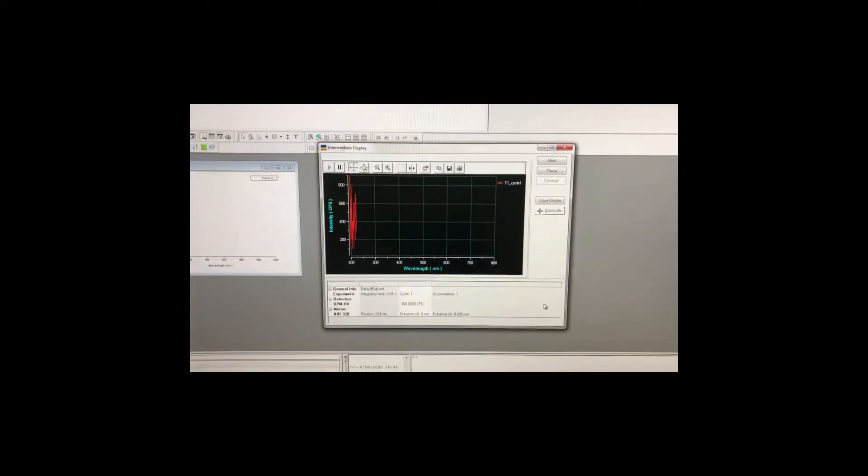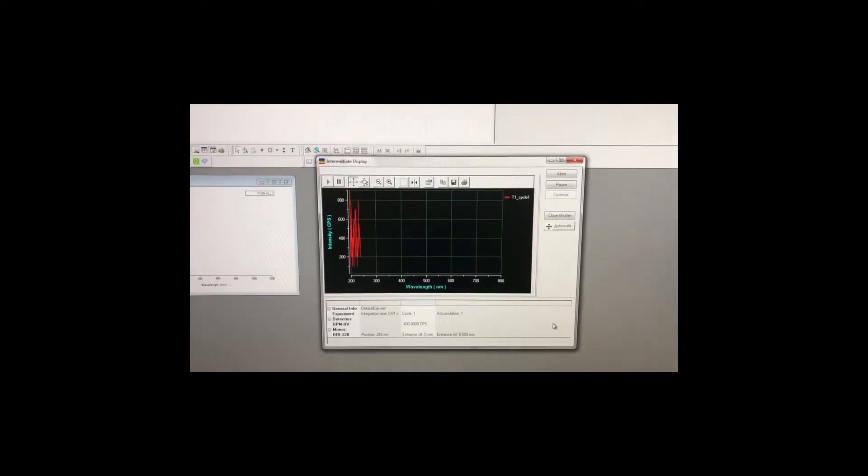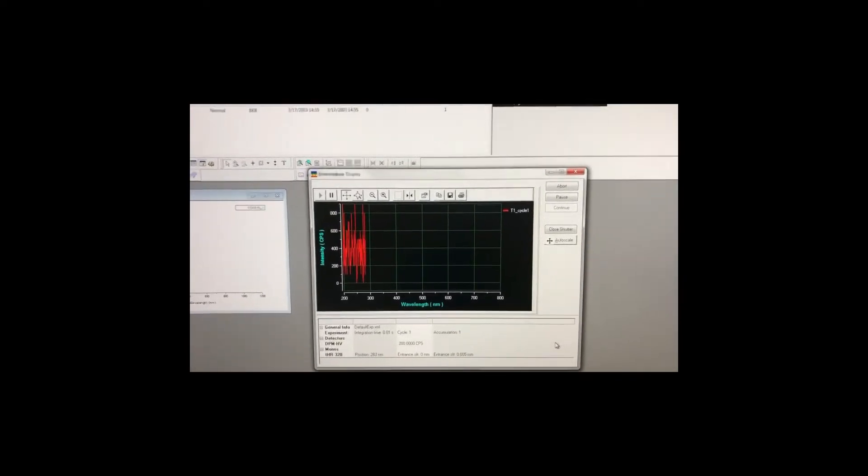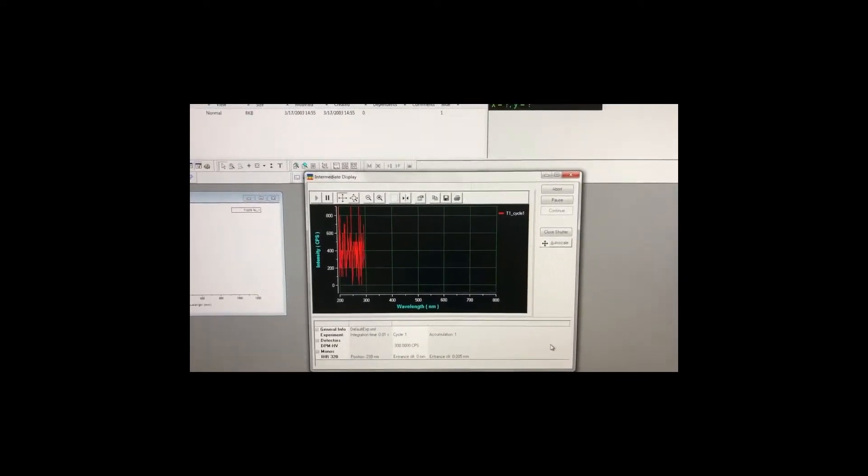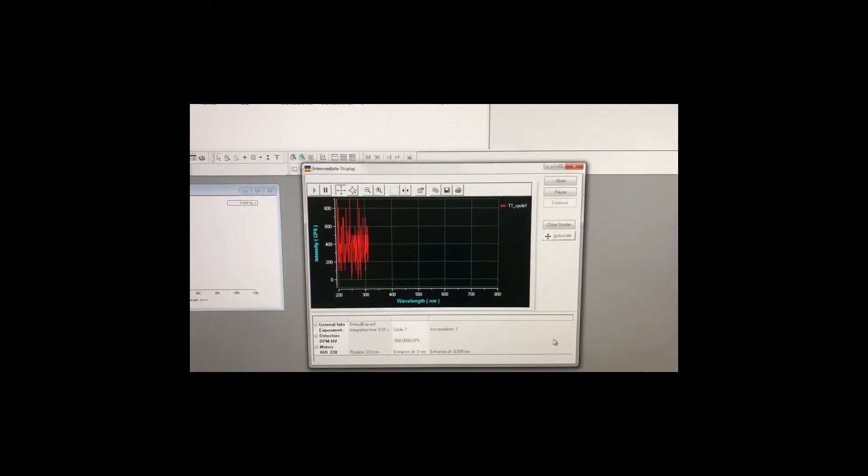Right now we are running the Horiba machine to measure from 200 nanometer wavelength to 800 nanometer wavelength. So let's wait for a while.